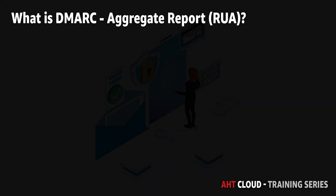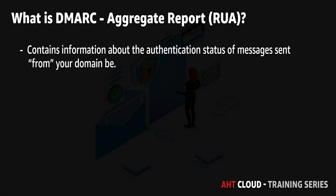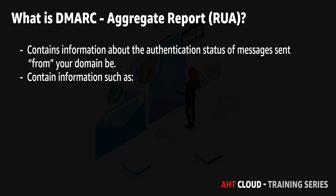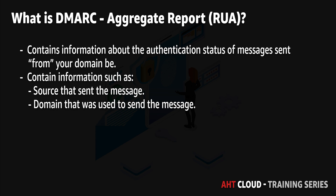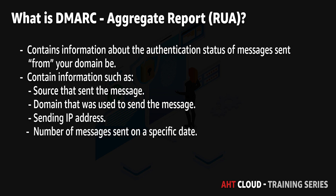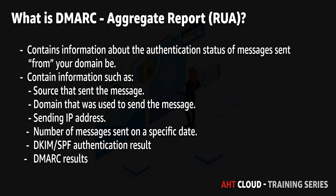Your DMARC aggregate report contains information about the authentication status of messages sent on your domain's behalf. Aggregate reports are free reports sent to you and contain information such as: the source that sent your emails, the domain name used to send messages, sending IP addresses, the number of messages sent on a specific date, the DKIM/SPF authentication result, and finally your DMARC results.